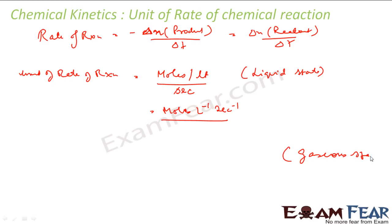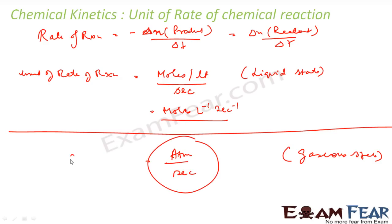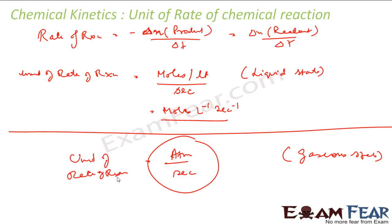In the gaseous state, concentration is expressed using atmospheric pressure — atm — and time will be in seconds. So the unit of rate of reaction in the gaseous state will be atm per second.